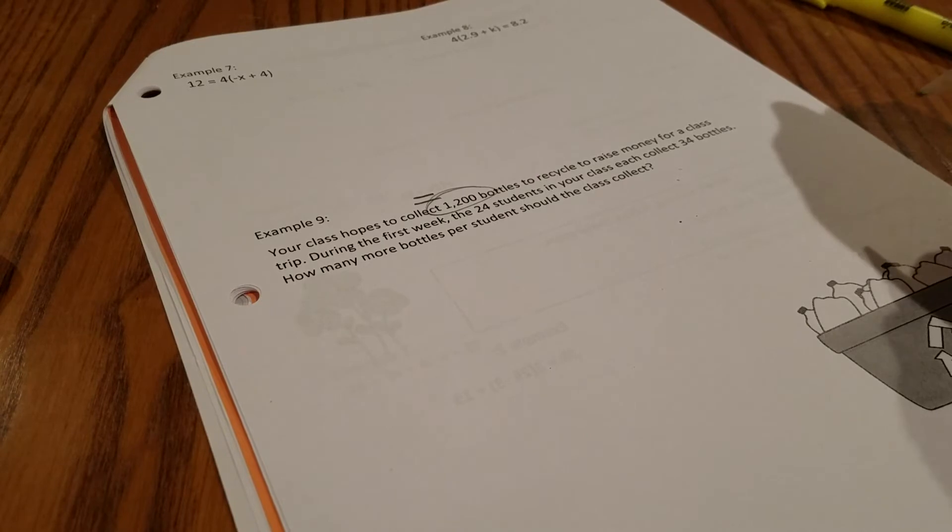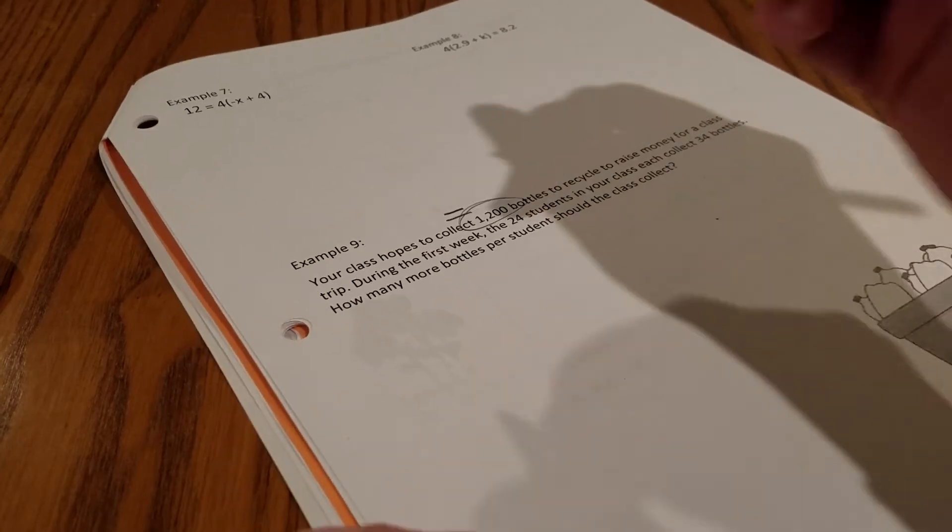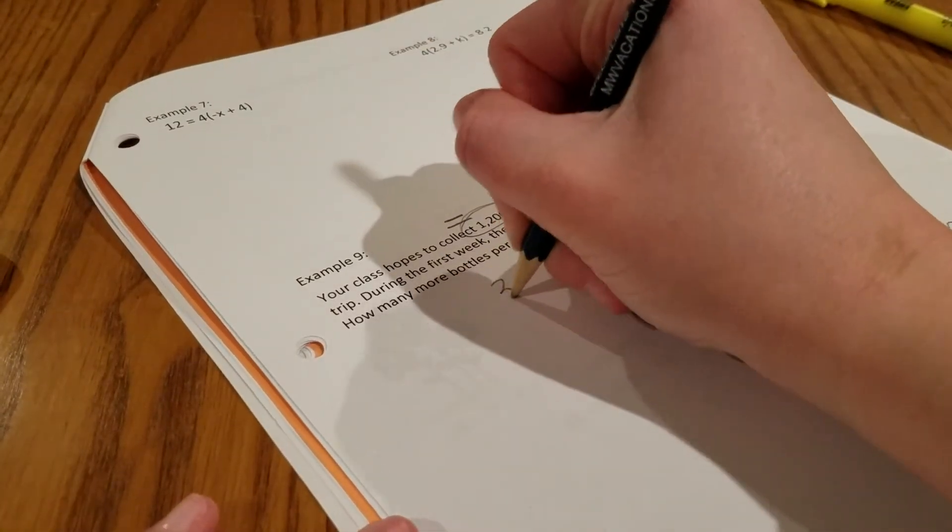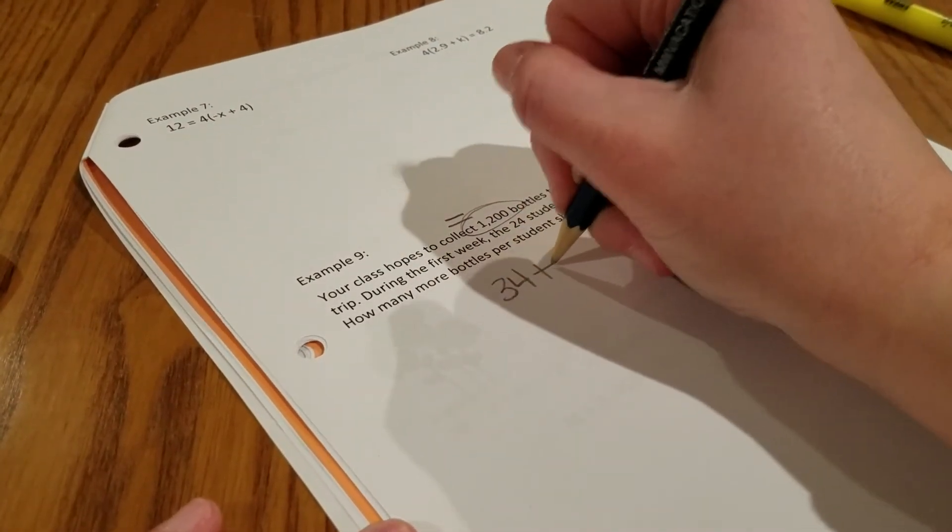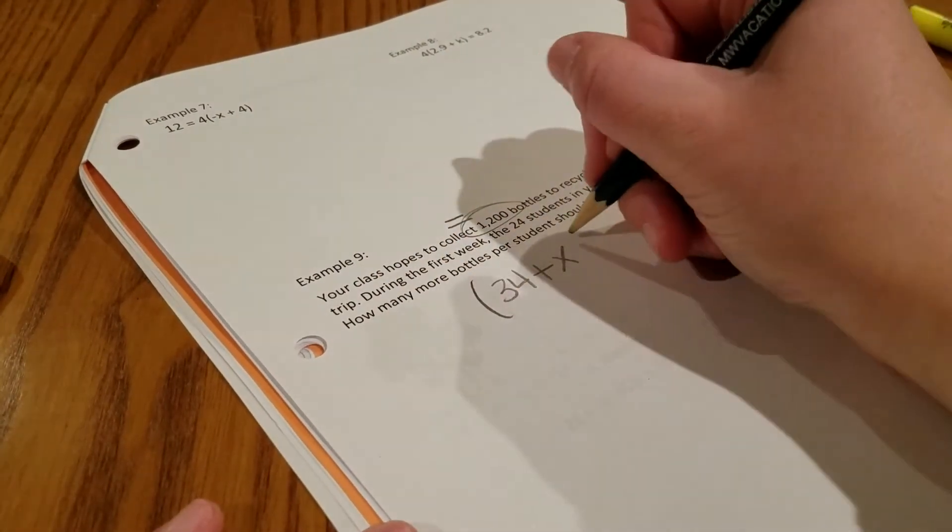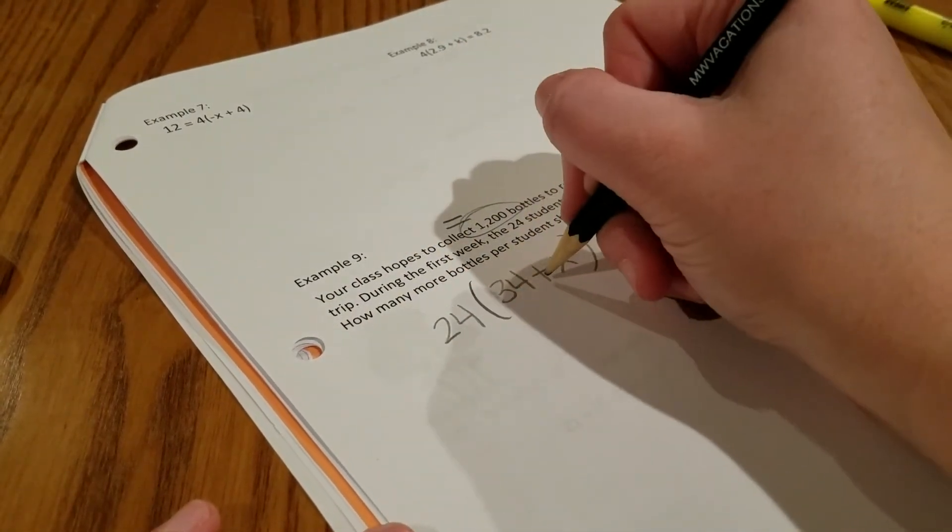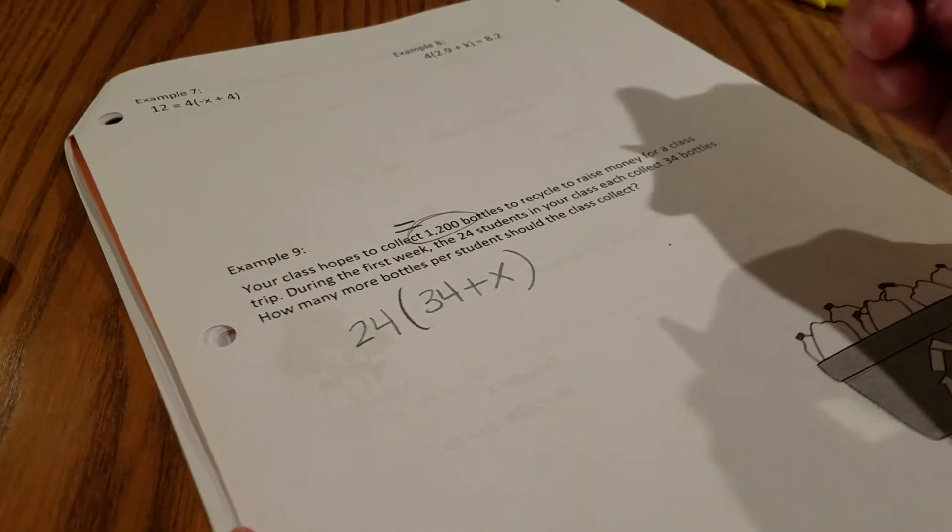During the first week, 24 students in your class each collect 34 bottles. How many more bottles per student should the class collect? Right now each kid has 34 bottles, and we need them to collect x more. That doesn't happen one time though. That happens for every person in the class. So that number gets multiplied by the 24 kids in the class. At the end we want 1,200 bottles.